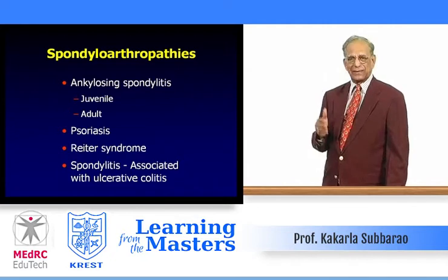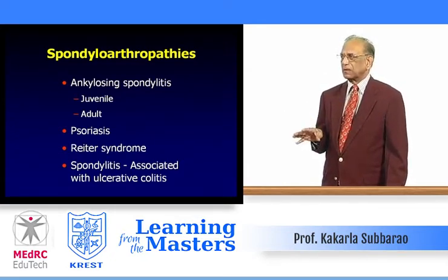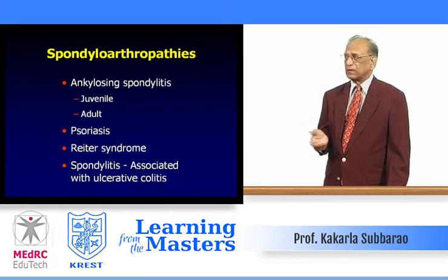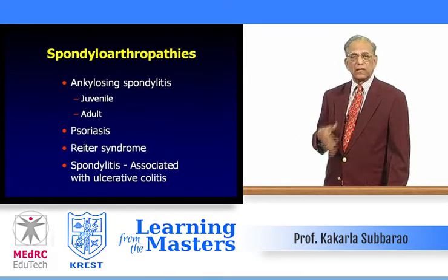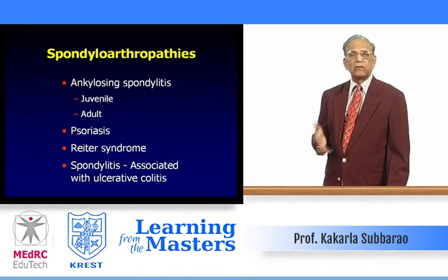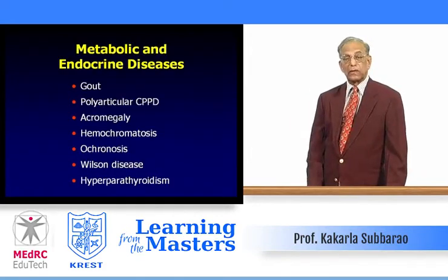The axial skeleton spondyloarthropathies include: ankylosing spondylitis (juvenile or adult), psoriasis, Reiter's syndrome, and spondylitis associated with inflammatory bowel disease such as ulcerative colitis, Crohn's disease, chronic dysentery, and in women with pelvic inflammation you can also get spondyloarthropathy.